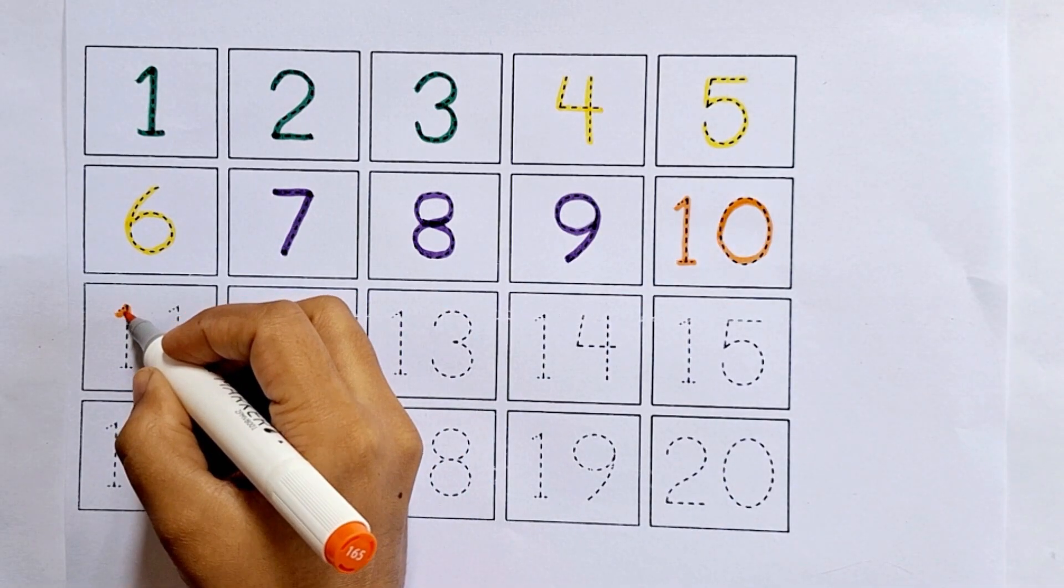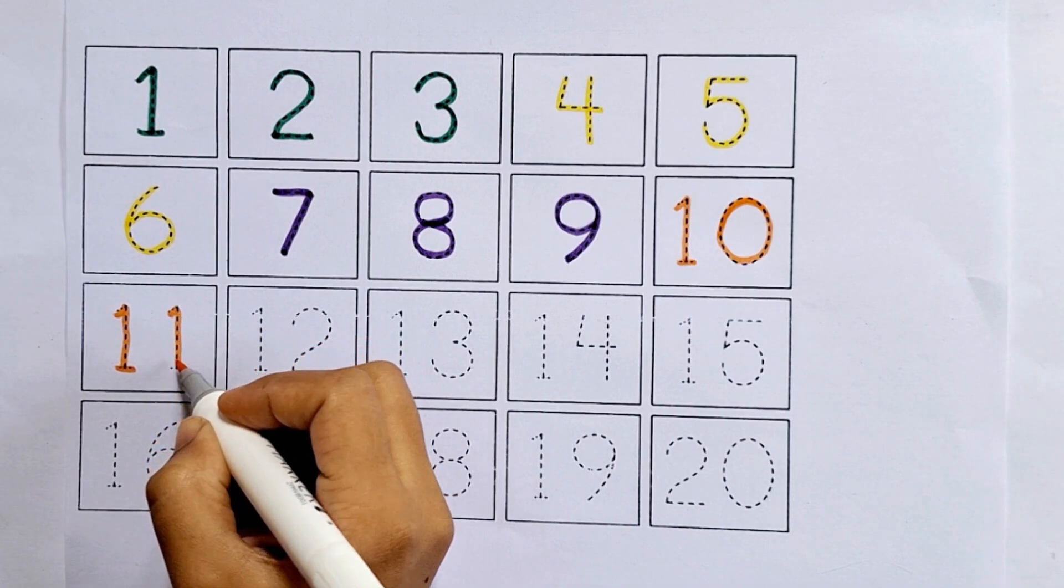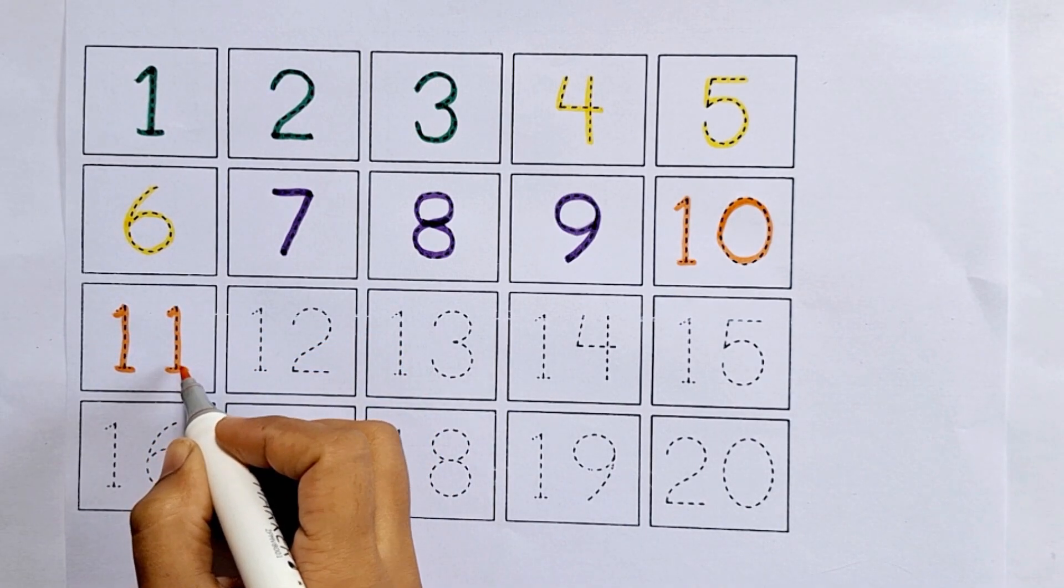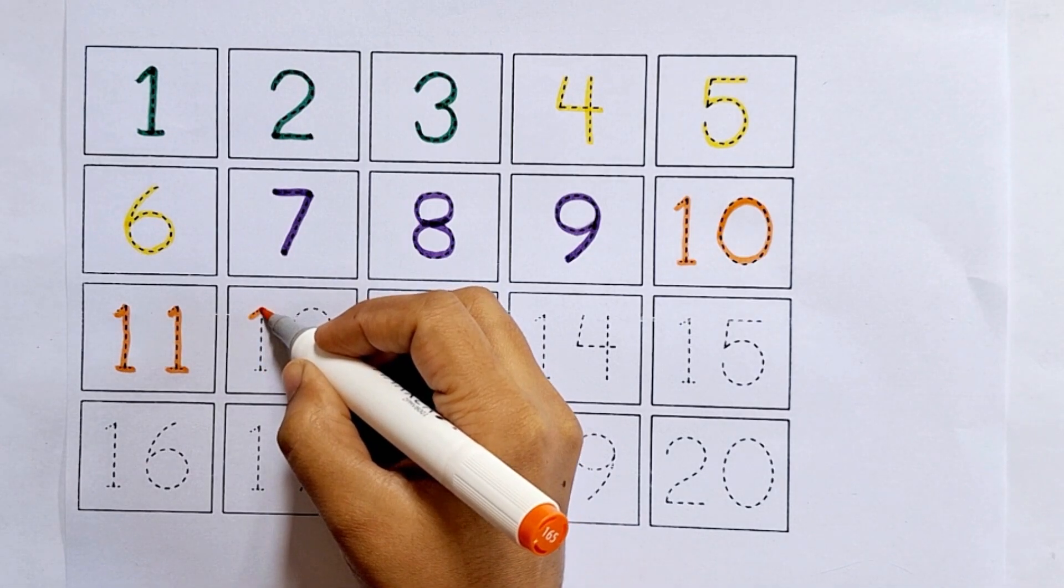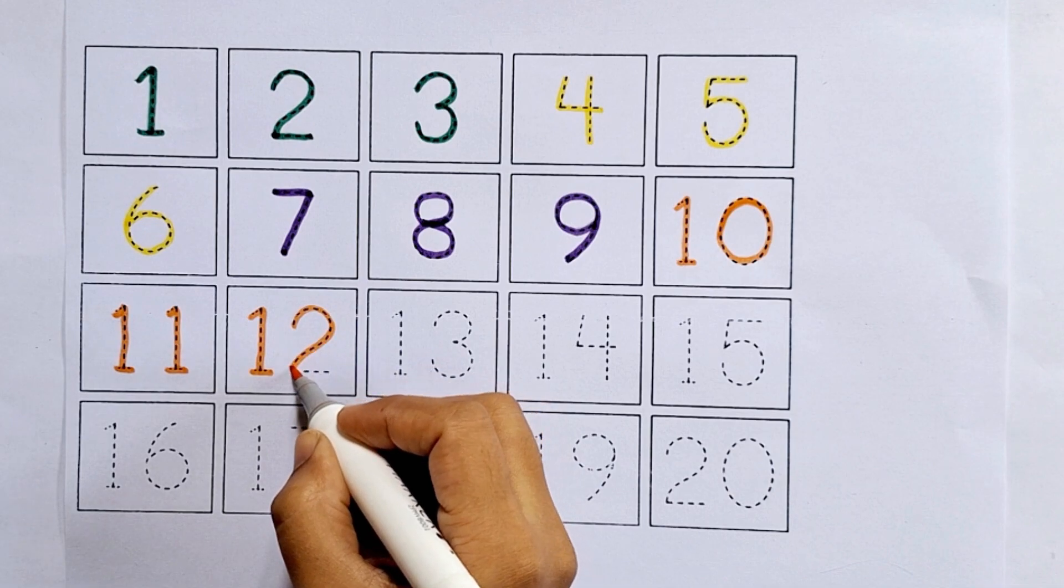Eleven, this is eleven. One, one, eleven. After ten comes eleven. Twelve, one, two, twelve. After eleven comes twelve.